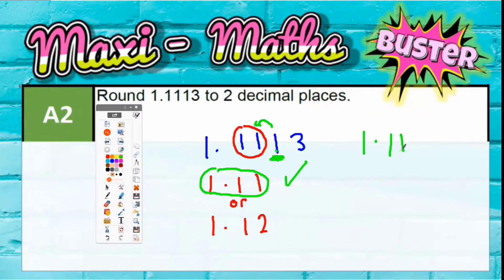If it said 1.1173, then that would be a different story because that third digit would be a 7 and that would round the one next door to it up. So then it would have been 1.12.